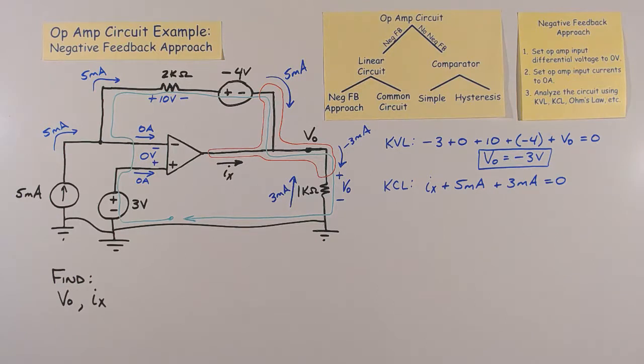So, summing the currents entering the node, we have IX plus 5 milliamps plus 3 milliamps equals 0. This means that IX is negative 8 milliamps.